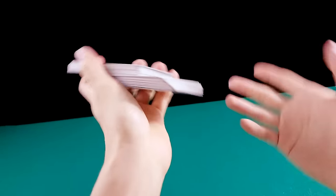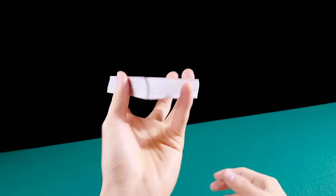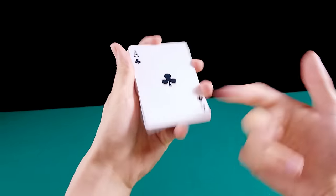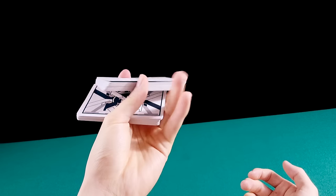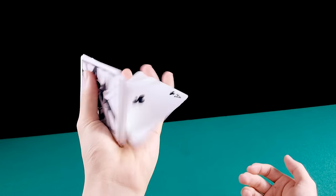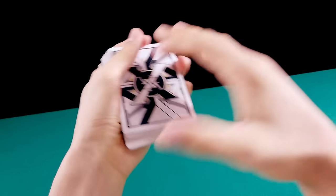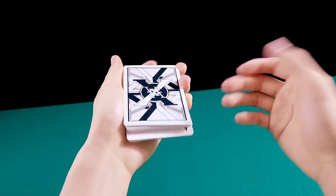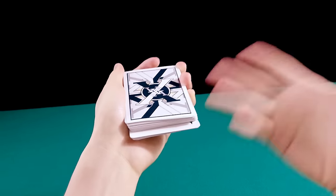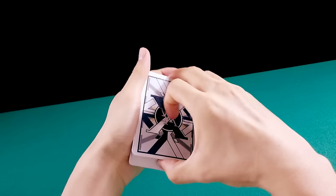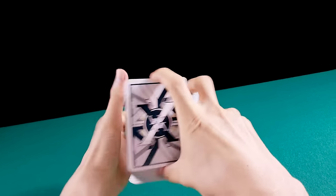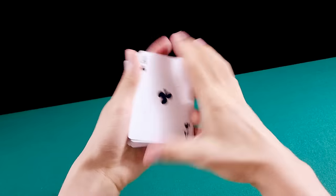Isso pode ser ruim ou pode ser bom. Dependendo do que você estiver fazendo. Faz de conta que eu quero controlar a carta de cima. Eu posso dar um corte e fazer um break nele. Assim. Esse é um break exagerado. Tem que ser sutil, na verdade, quando você vai iludir a audiência com algum truque de mágica ou sleight of hand. E faz de conta que você quer controlar a carta no topo. E você usa essas técnicas para deixar a carta no topo.